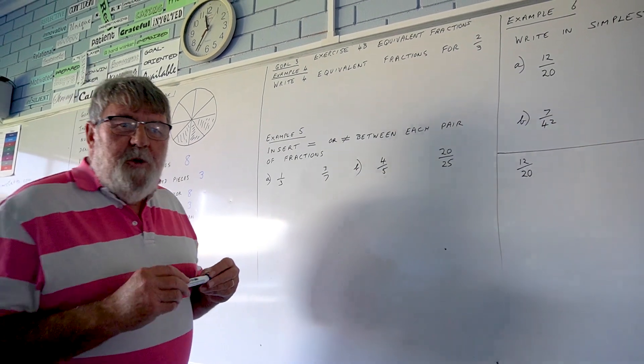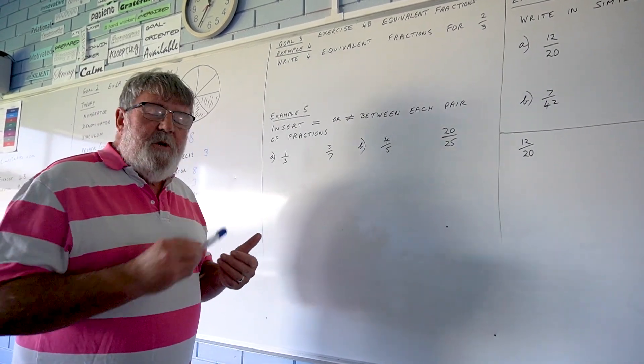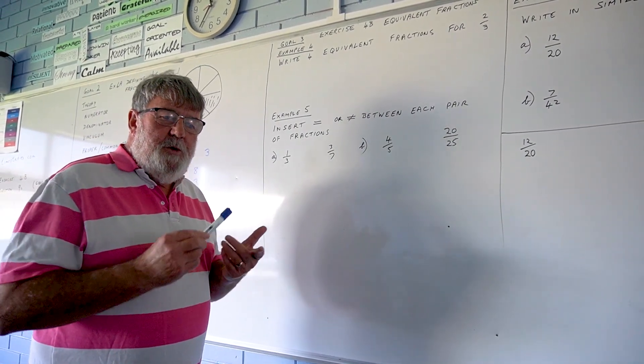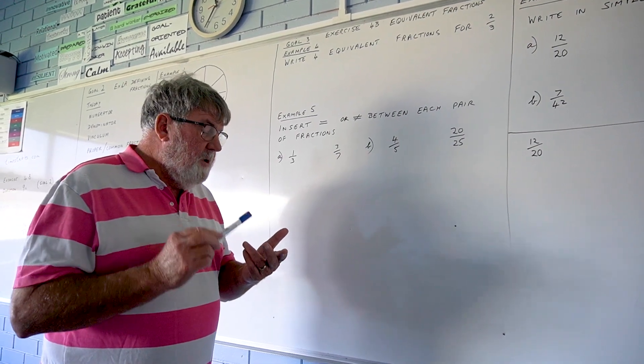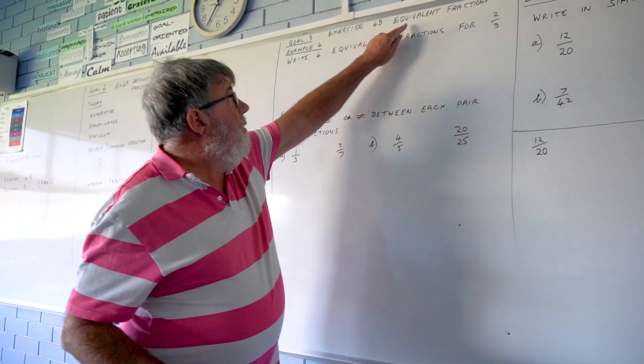Welcome back. You're now moving on to Goal 3. Remember Goal 1 was checking in on times tables. Goal 2 was defining fractions. We're now going to talk about equivalent fractions.